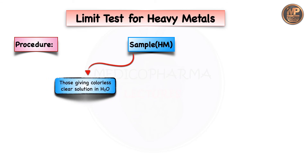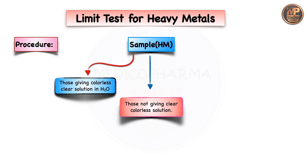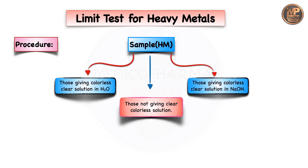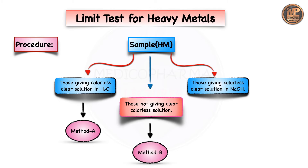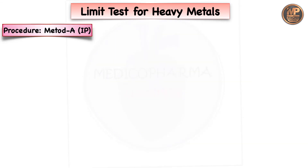The procedure categorizes samples into three groups. The first category is samples that give a clear colorless solution in water — Method A is followed. The second category is samples that do not give a clear colorless solution in water — Method B is followed. The third category is samples that give a clear colorless solution in sodium hydroxide (NaOH) — Method C is followed.